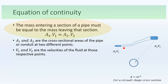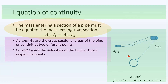In this equation, 'A' represents the cross-sectional area. If it is circular, we use π r². For other shapes, a different equation applies. 'V' represents the velocity of the fluid. This is the inlet and this is the outlet, so the cross-sectional area times velocity at the inlet equals the cross-sectional area multiplied by velocity at the outlet.